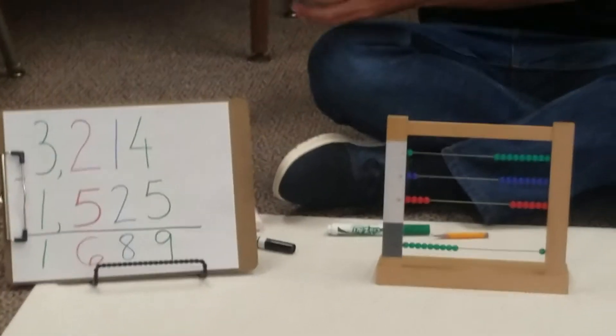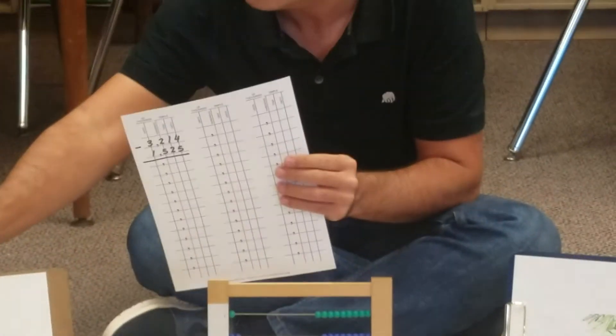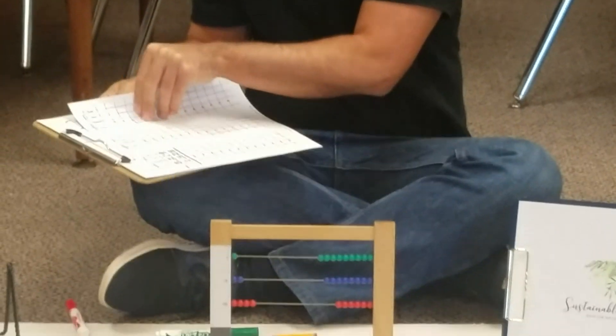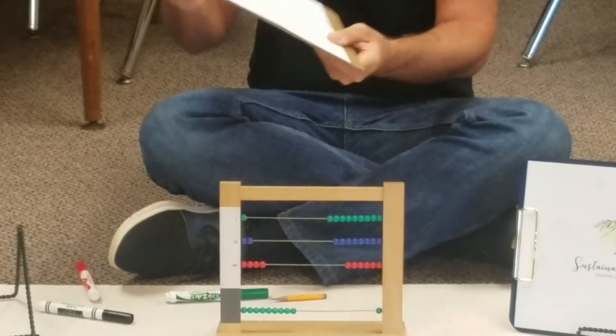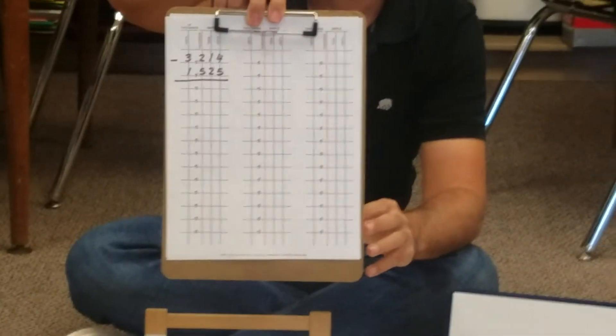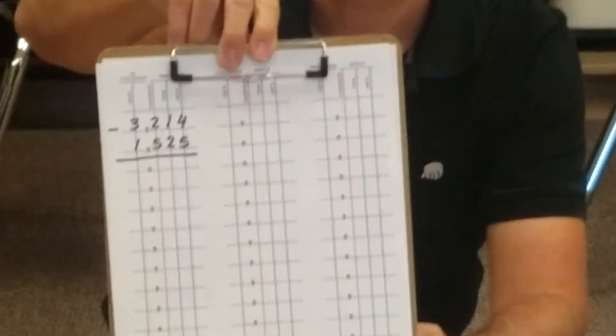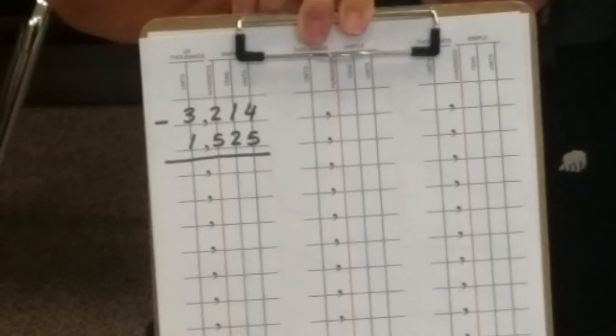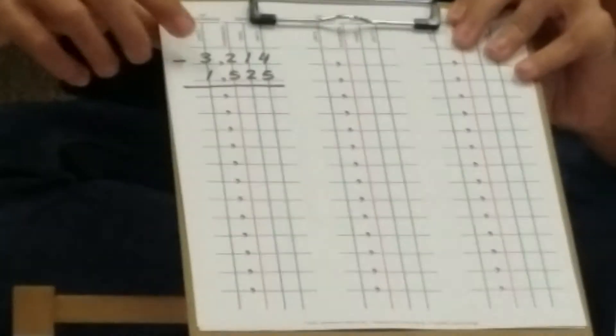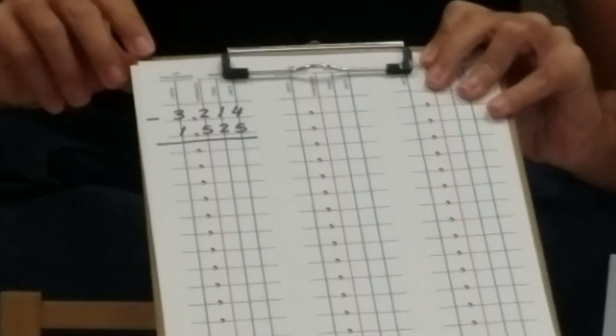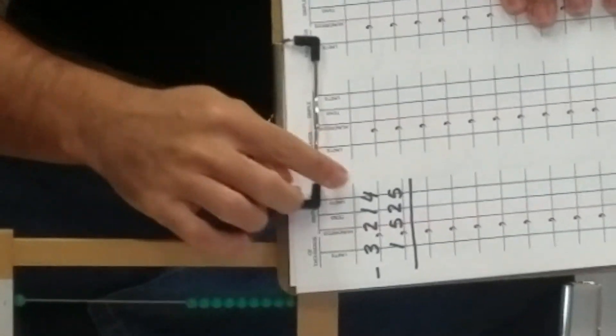So now we're going to see how we can write it on our bead frame paper. Here we recorded the equation. You can see how each line represents each one of the lines. It represents each one of the lines of the bead frame.